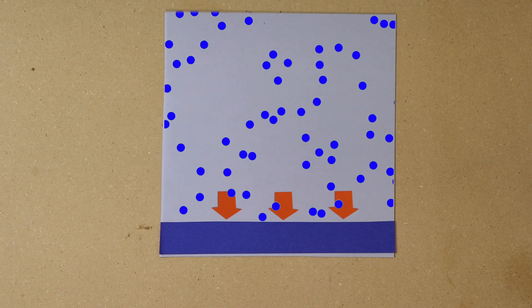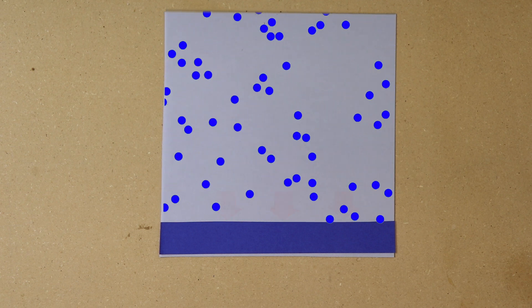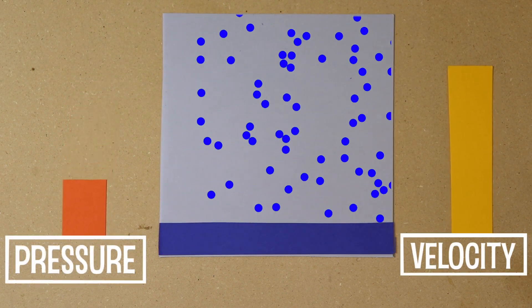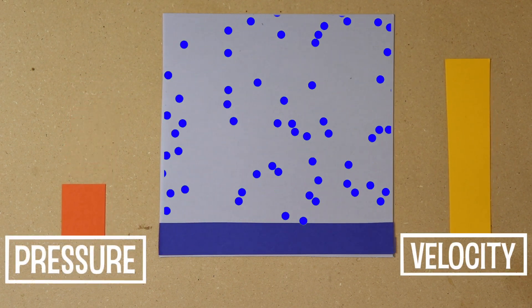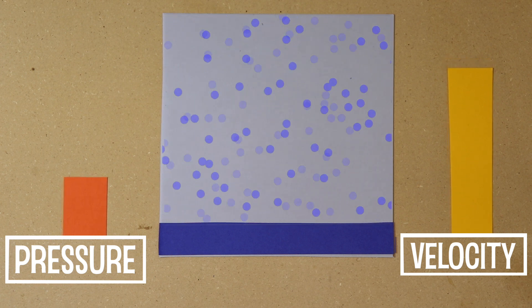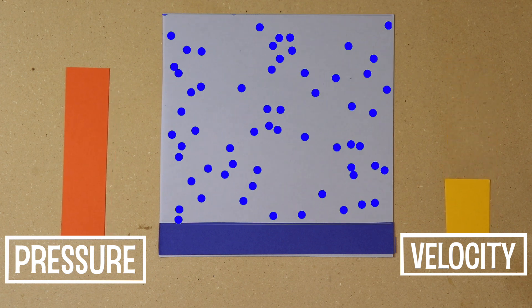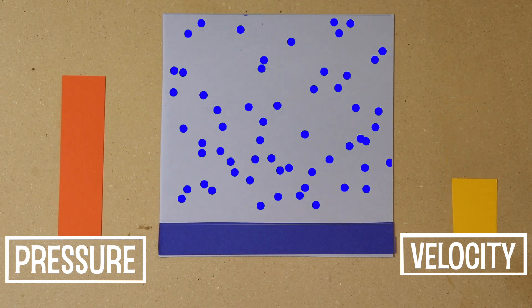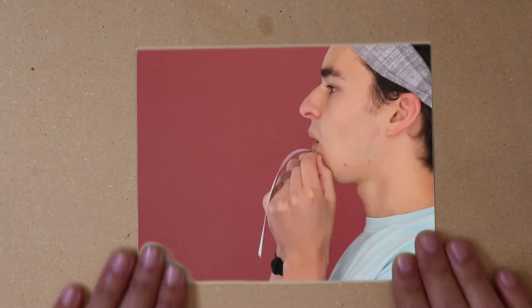This illustrates a really important fluid mechanical relationship: when the speed or the velocity of a flow is higher, then the pressure at any point in the flow is lower. So the bigger the velocity, the smaller the pressure, and vice versa. So what is happening when you blow over the piece of paper?